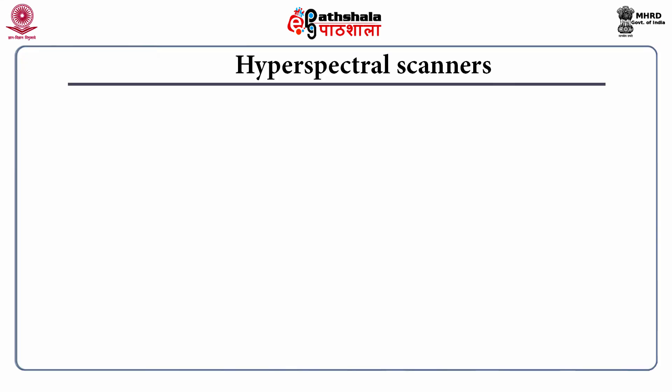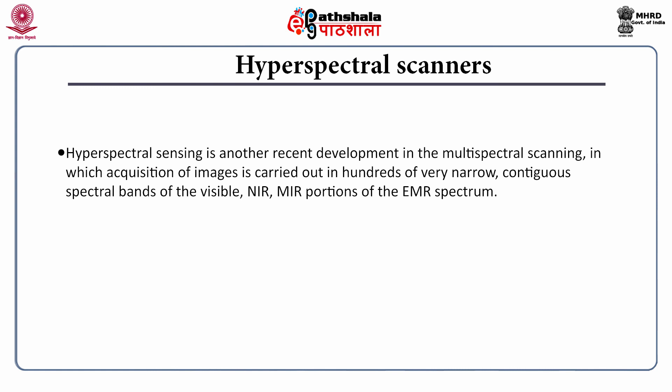The next scanner type is the hyperspectral scanner. Hyperspectral sensing is a recent development in multispectral scanning in which acquisition of images is carried out in hundreds of very narrow, contiguous spectral bands of the visible, near infrared, and mid-infrared portions of the electromagnetic spectrum. Hyperspectral scanners can also be along-track or across-track scanners.